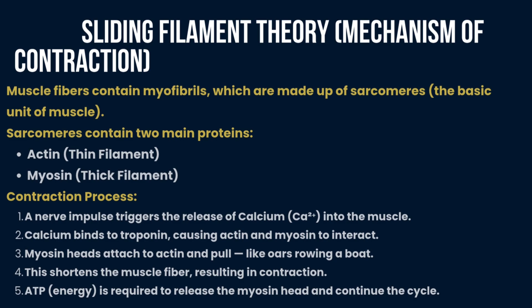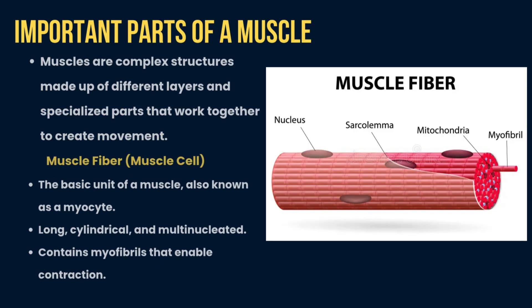Muscles are complex structures made up of different layers and specialized parts that work together to create movement. The basic unit of a muscle is the muscle fiber, which is long, cylindrical, and multi-nucleated, and contains myofibrils that enable contraction. Myofibrils are thread-like structures found inside the muscle fibers.